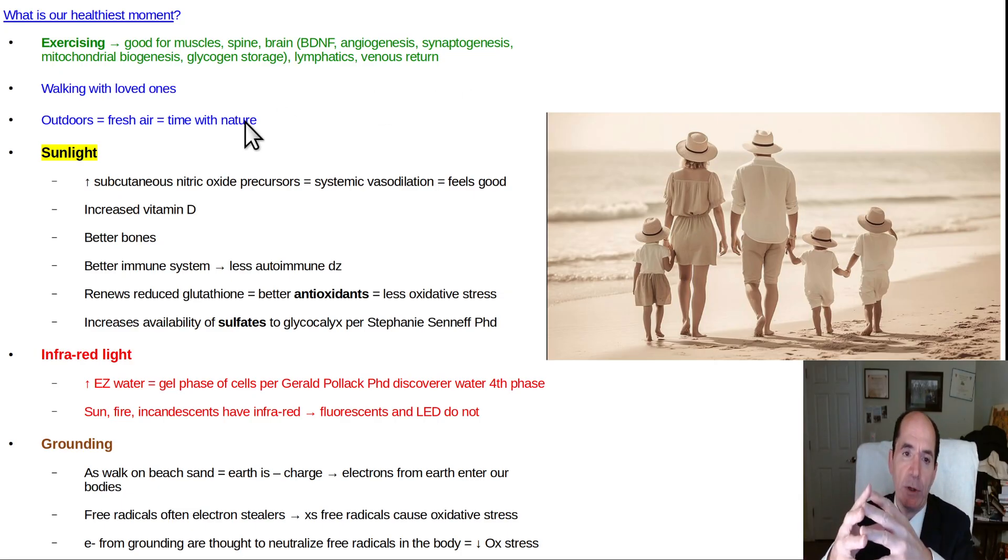You get mitochondrial storage, glycogen storage in the astrocytes, mitochondrial biogenesis production of new mitochondria. So the exercise has lots of good things. It moves your lymphatics. You get 10 to 30 fold increased lymphatic flow. It makes your immune system work better to prevent infection and cancer. You get better venous return from your legs.